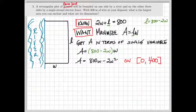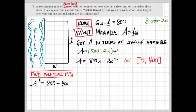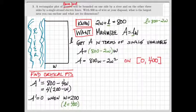To find the critical points, you're going to take the derivative of area with respect to width. That will give us 800 minus 4w. Set it equal to 0 to find that the derivative is 0 when the width equals 200. That corresponds to the length equaling 400 meters.